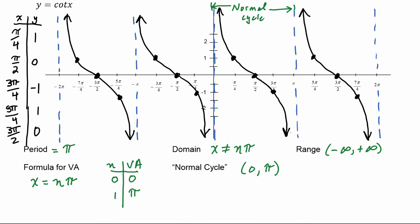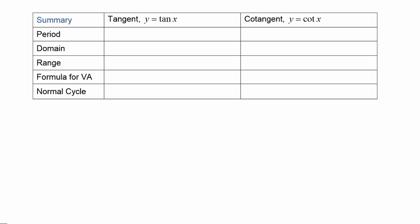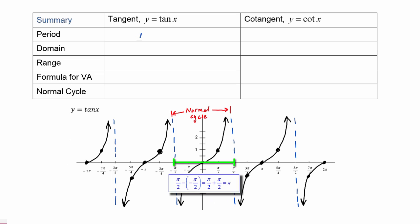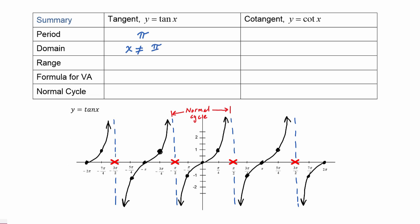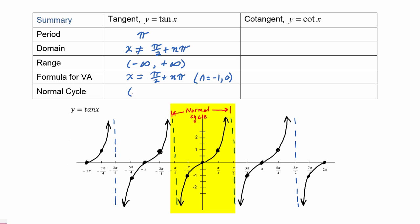We can make a summary chart. For tangent: the period is pi; the domain is x cannot equal pi over two plus n pi; the range is negative infinity to positive infinity; the formula for vertical asymptotes is x equals pi over two plus n pi. We plugged in n equals negative one and zero for the normal cycle, and the normal cycle for tangent goes from negative pi over two to positive pi over two.